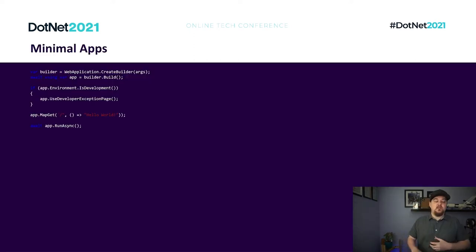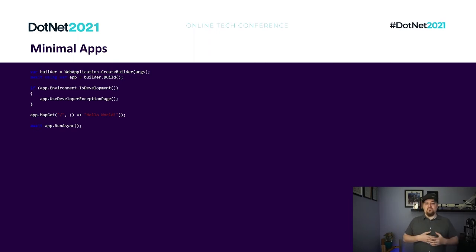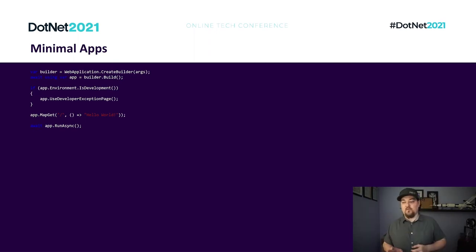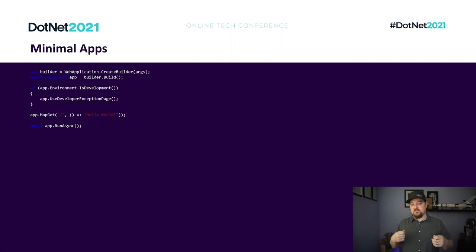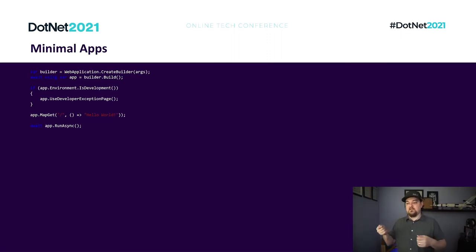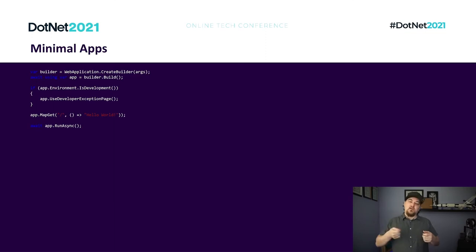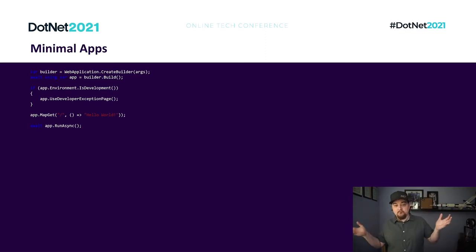Here's a quick example of minimal APIs. This is an entire program — an API you hit with an HTTP request and it returns the string 'hello world'. It all sits inside a single file called program.cs, probably with a .csproj sitting next to it, and that's it.